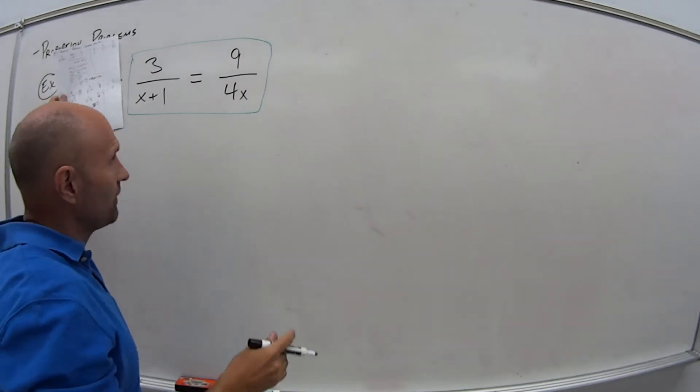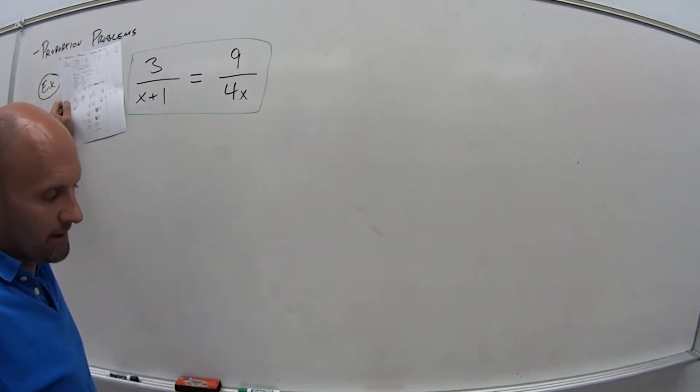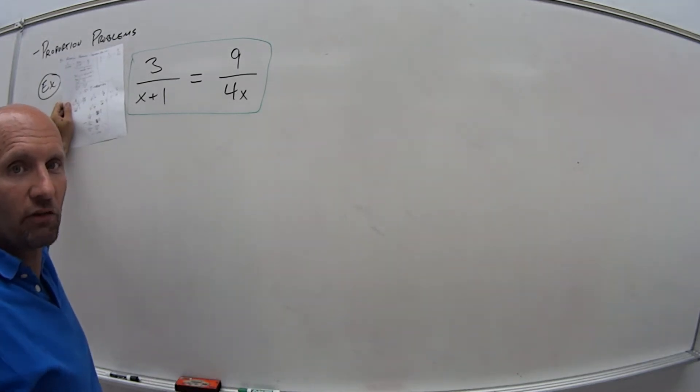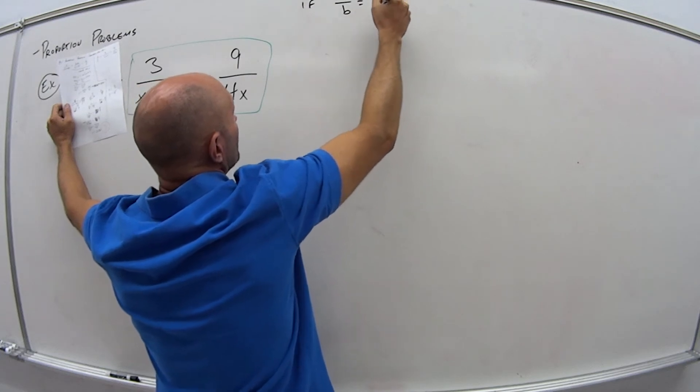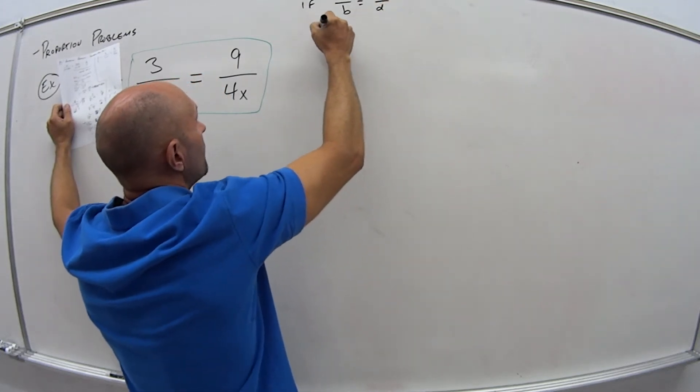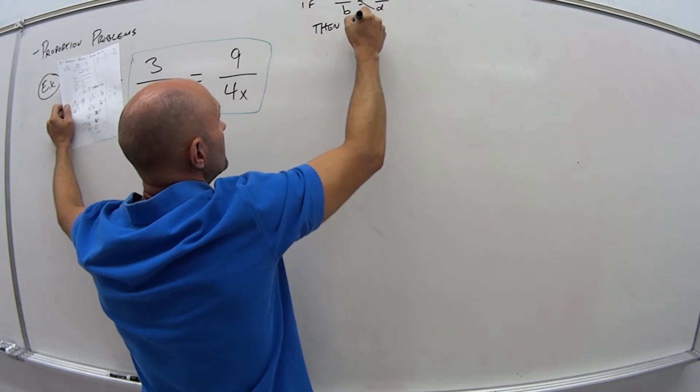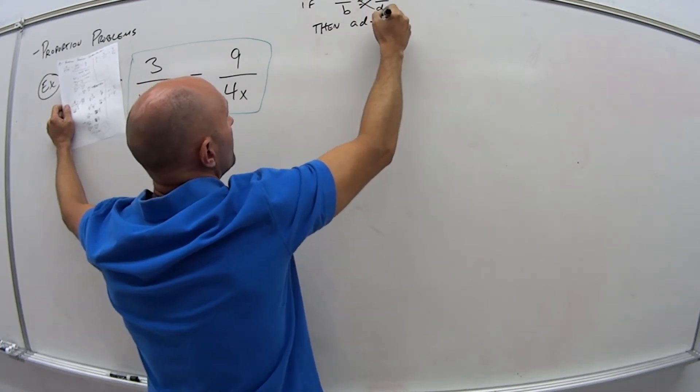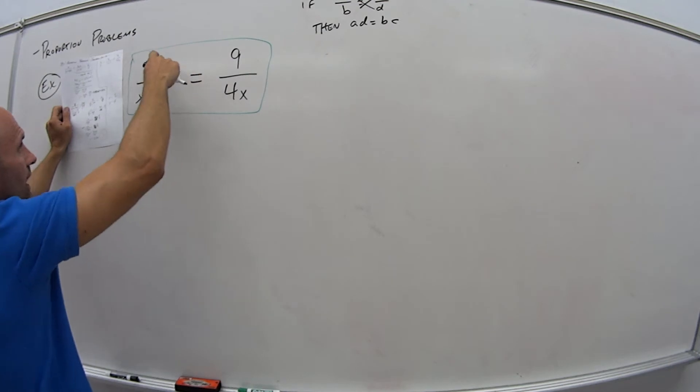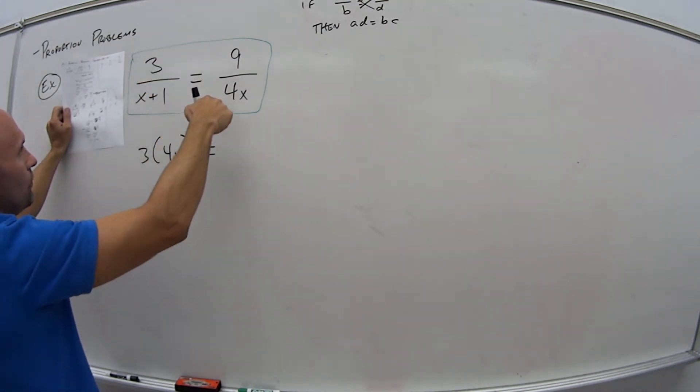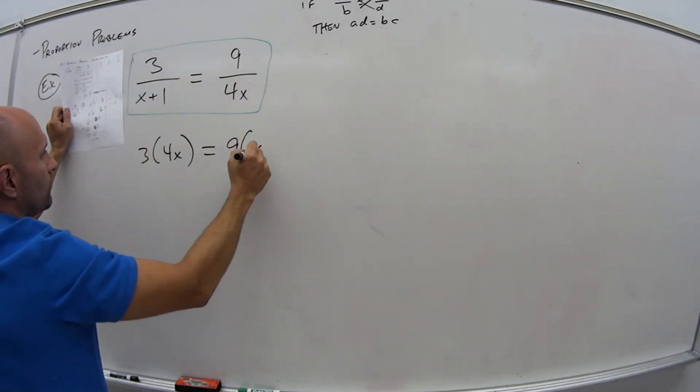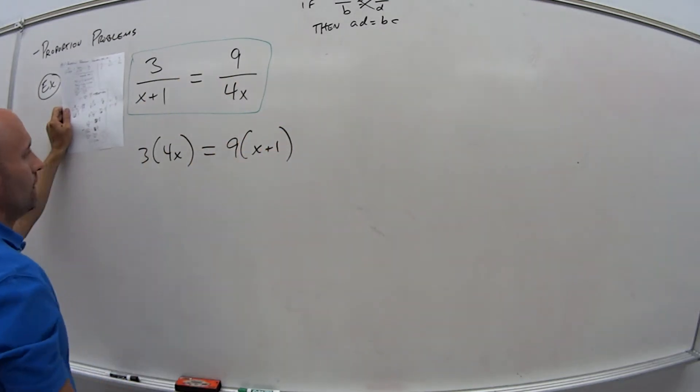Now, if I have this guy equals that one, if you think back, it was a few videos ago, but if I have this type of setup, how do I solve it? I cross multiply, right? So if I had if a over b equals c over d, then a times d equals b times c. So that's what I have here, a times d, 3 times 4x is equal to this guy, 9 times x plus 1.